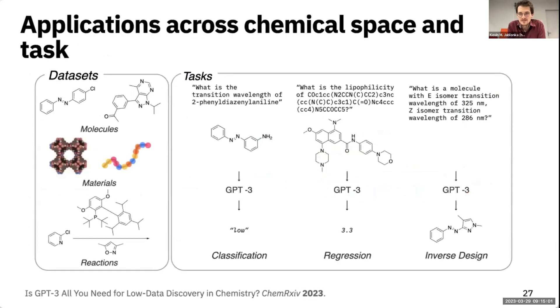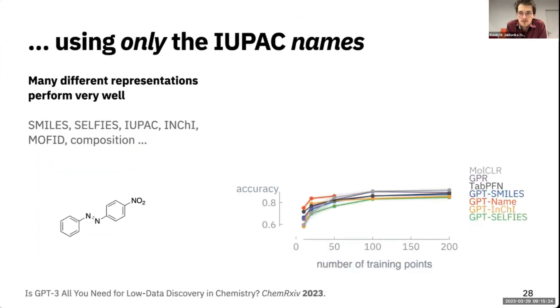Because we saw that this is so good, we went out to different tasks across chemical space - from molecules, materials, and reactions. For classification, regression, also inverse design - that means give me a SMILES string that has a given probability, a given band gap, for instance. In all cases, we were surprised. Here you have photo switches - you want to know when this bond switches between E and Z isomer. We trained in different representations like names, SMILES, SELFIES, InChI keys. Even with just the name of the compound, you beat existing benchmarks on this task, which was quite surprising to us.